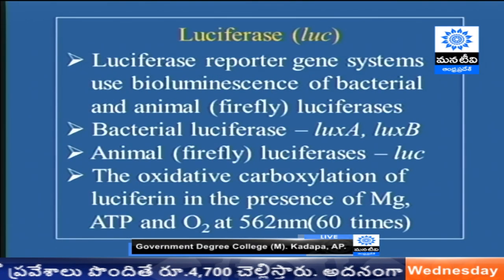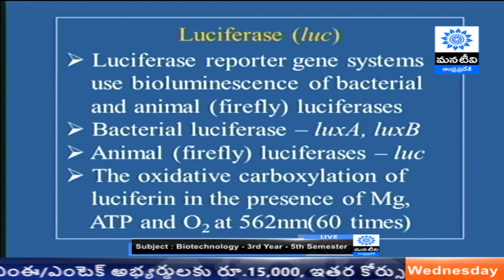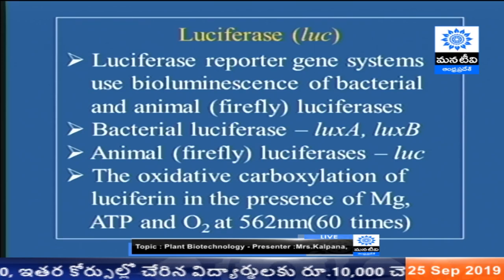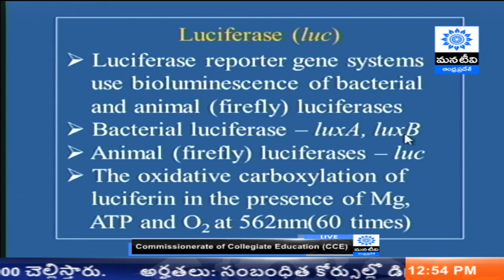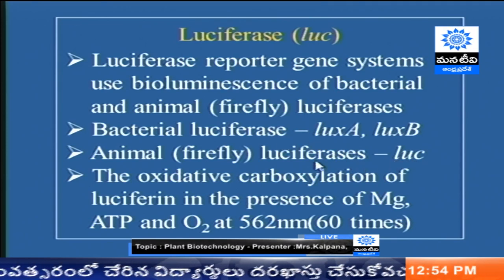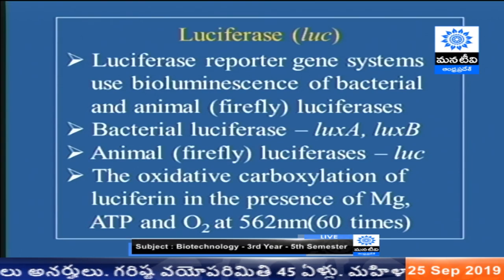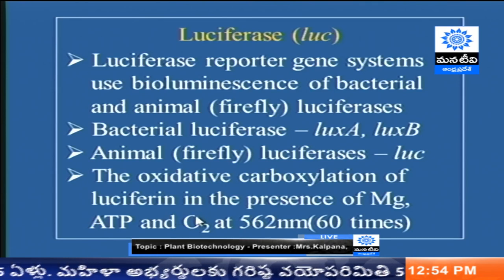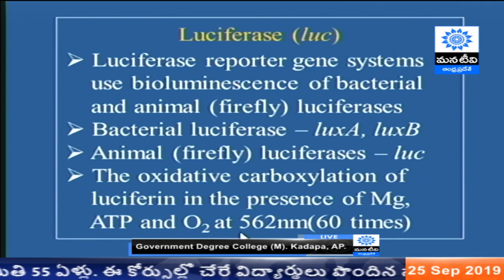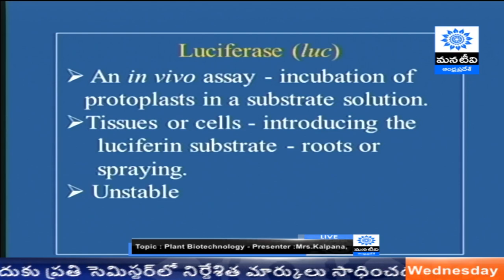The second-to-last reporter gene is luciferase, based on bioluminescence. There are many types of luciferase enzymes. Bacterial luciferase is a heterodimer of lux A and lux B proteins. Animal luciferase is a monomer — LUC — which gives 100 times more quantum yield compared to any other luciferase. It produces luminescence in the presence of luciferin as substrate, along with magnesium, ATP, and oxygen, emitting at 562 nanometers. However, it is somewhat unstable, and the color signal is minimal, so in the majority of cases luciferase is not commonly used.